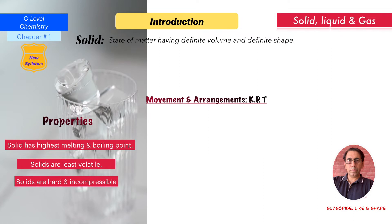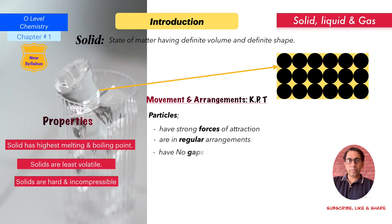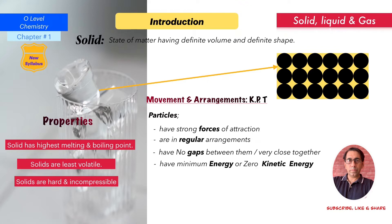Movement and arrangement of particles according to KPT — kinetic particle theory. Particles have strong forces of attraction. Particles have a regular arrangement in a lattice pattern, as you can see in the picture. There are no gaps; particles are very close together. They have minimum kinetic energy — essentially zero kinetic energy. Particles do not move; they just vibrate, possessing only vibrational energy.